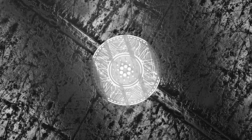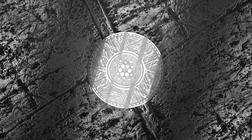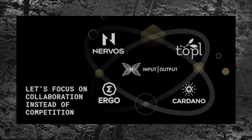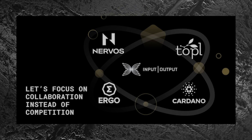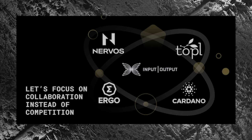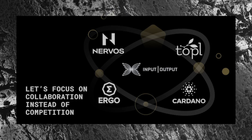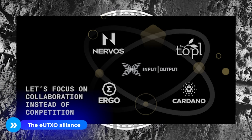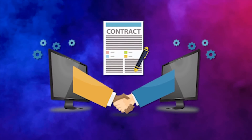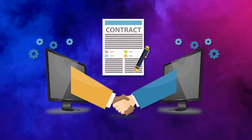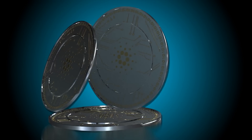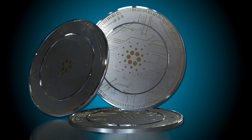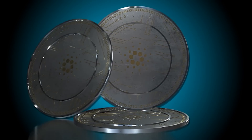Cardano isn't the only blockchain running on an EUTXO system. Projects like Ergo and Nervos are also using this model for cryptocurrency ledger accounting. In fact, these projects, along with Cardano, form the EUTXO Alliance, which was founded back in 2021. As smart contracts become more and more complex and Cardano progresses further along its development roadmap, it should become obvious why developing EUTXO was a smart move.